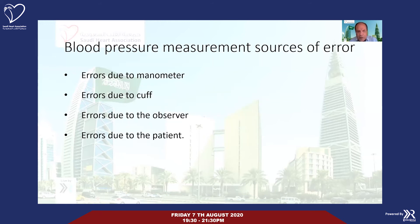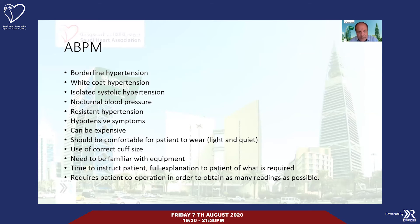Blood pressure measurement sources of error include errors due to the manometer, cuff size errors, observer errors, and patient errors. With telemedicine, the patient measuring blood pressure at home using new technology does not depend on mercury sphygmomanometers or uncalibrated hospital electronic machines. There is no cuff error with newer wearable batch technology. Ambulatory blood pressure monitoring — as shown earlier — is important and we use it, but it is expensive.